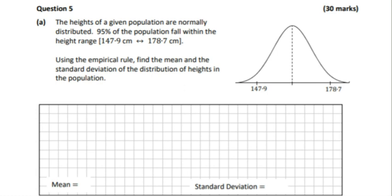We have the 95% confidence interval between these two values: 147.9 cm and 178.7 cm. What does this actually mean? Well, it means from the empirical rule...